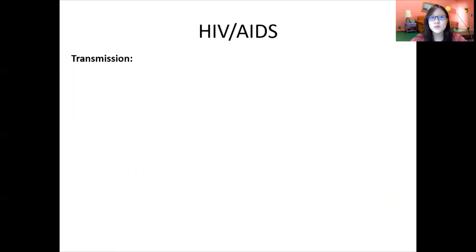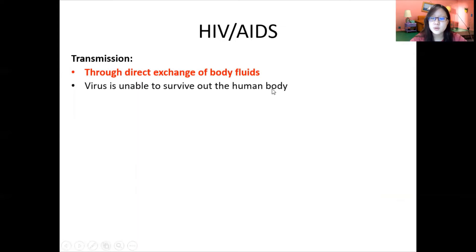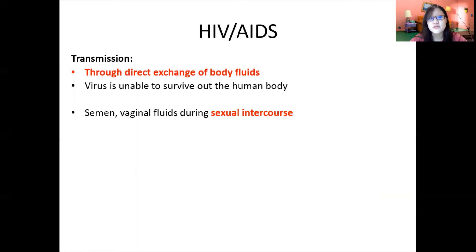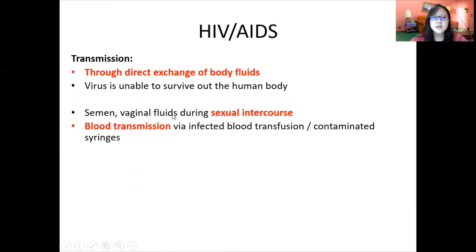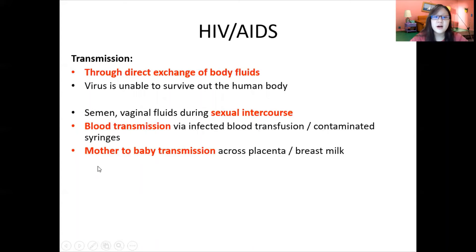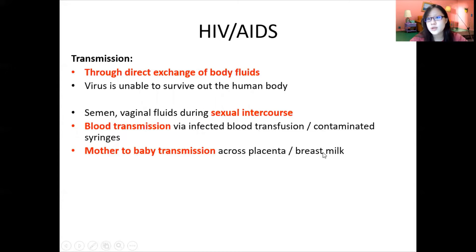HIV transmits through direct exchange of body fluids. It cannot survive outside the human body, so there must be direct contact. There are three main routes: number one, sexual intercourse via semen or vaginal fluids; number two, blood transmission via infected blood transfusion or contaminated syringes; and number three, mother-to-baby transmission — across the placenta during pregnancy, during birth, or through breast milk.